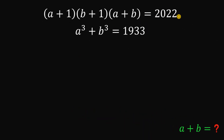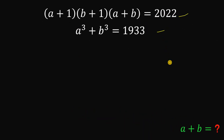All right, so given these two equations, the goal is to find the sum of a and b. One way to answer this is to get the value of a and the value of b, then get their sum. The other approach is to find exactly a+b directly.